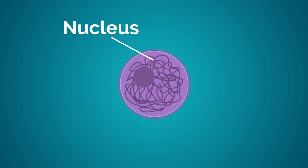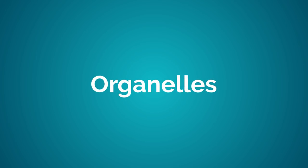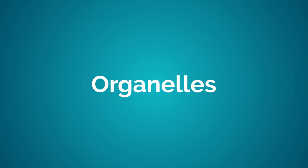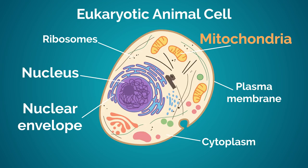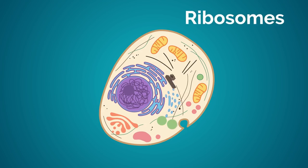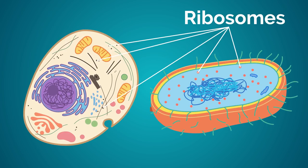So the nucleus is a key factor in identifying whether a cell is prokaryotic or eukaryotic, but the other organelles are too. Organelles are tiny structures within the cytoplasm that perform specific jobs, like the energy-providing mitochondria in the animal cell. Eukaryotic cells contain lots of different organelles, whereas ribosomes are the only organelles found in prokaryotic cells.